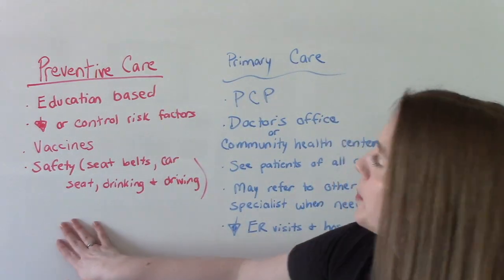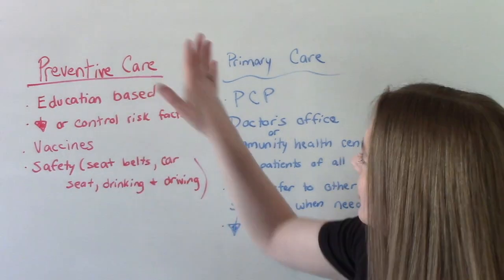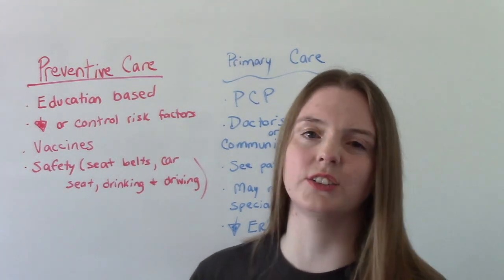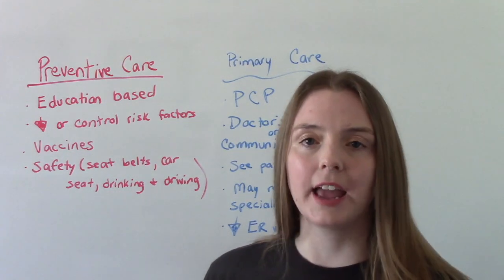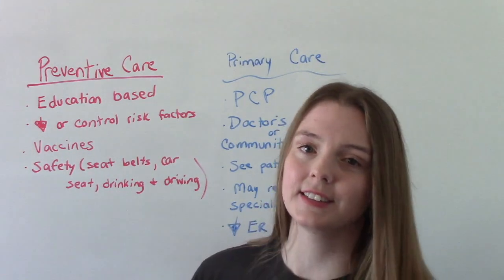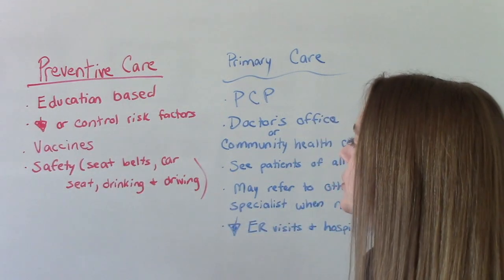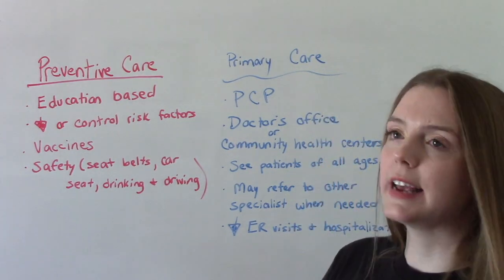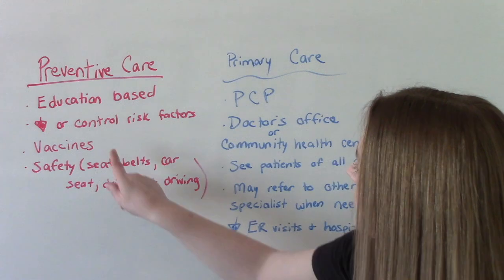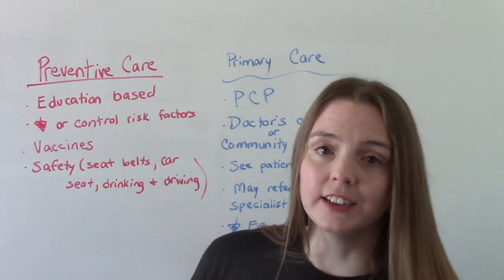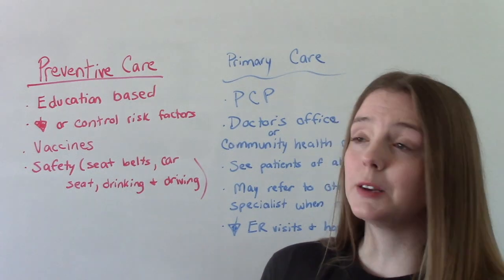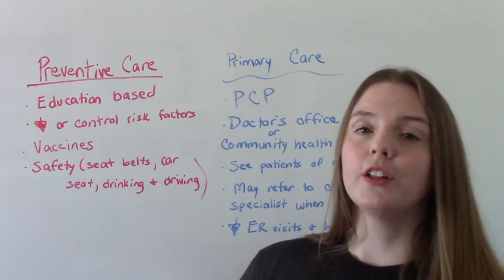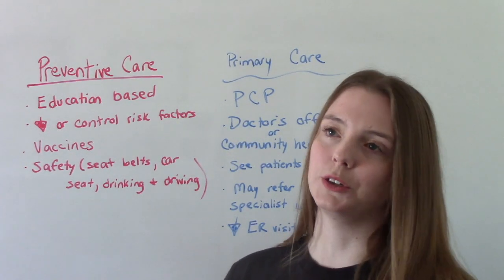Starting with preventive care — preventive care is going to be mostly education based. We're not going to be doing any sort of treatments of illnesses or anything like that. This is going to be educating patients so that they don't develop illnesses. It is used to decrease or control risk factors that the patient might already have. Some examples of preventive care include things like vaccines or safety education — educating them about using your seatbelt, car seat safety for children, don't drink and drive. All of these things are going to prevent injury or illness.